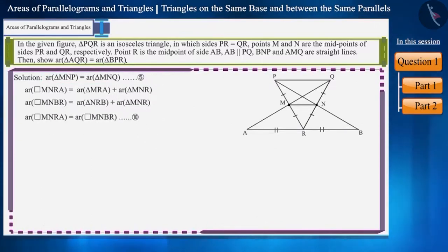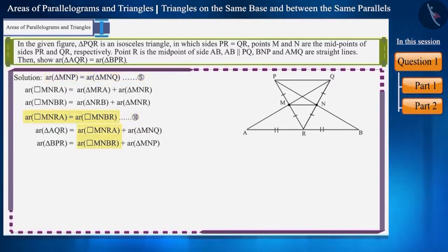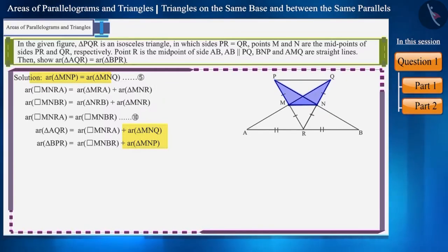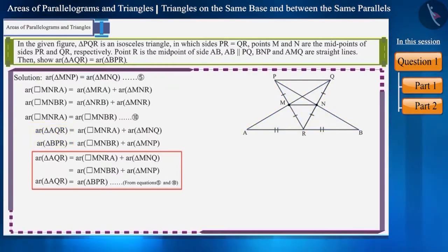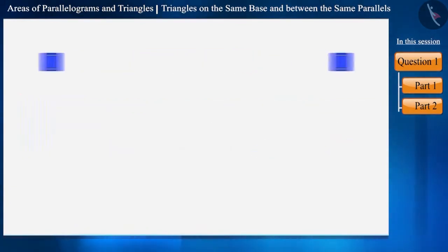We can write the area of triangle AQR as the sum of quadrilateral MNRA and triangle MNQ, and the area of triangle BPR as the sum of quadrilateral MNBR and triangle MNP. The area of the two quadrilaterals MNRA and MNBR is equal, and we saw that the areas of triangles MNP and MNQ are also equal. Therefore, the area of triangle AQR equals the area of triangle BPR. Thus, we have proved this. Friends, that's all in today's session. We solved a question based on triangles situated on the same base and between the same parallel lines. Let's meet in the next video.